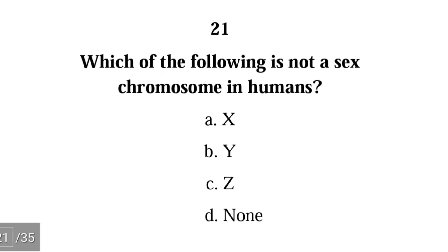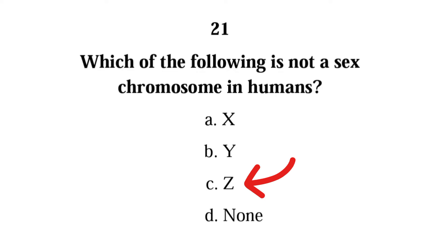Number twenty-one: which of the following is not a sex chromosome in humans — X, Y, Z, or none? The correct answer is C, Z. The letter Z is not used to represent a sex chromosome in humans.